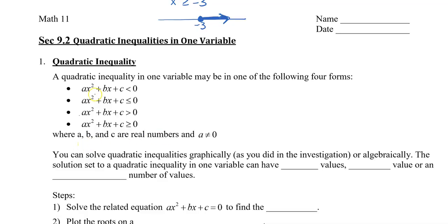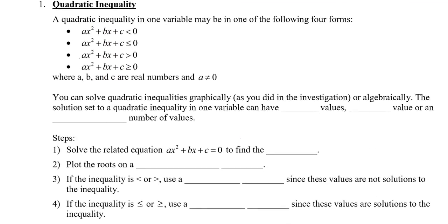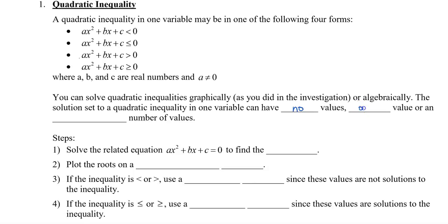A, B, and C are real numbers, and A does not equal 0, because if it does equal 0, we would actually have a line. So you can solve quadratic inequalities graphically, just like we did in the investigation last day, or we can do this algebraically, which I'm going to show you today. The solution set to a quadratic inequality in one variable can have no values, one value, or an infinite number of values.